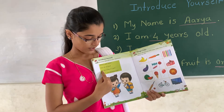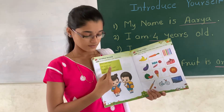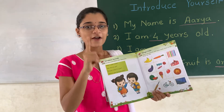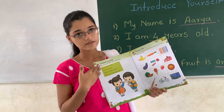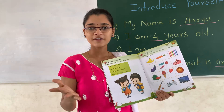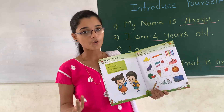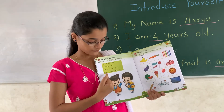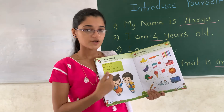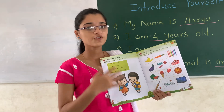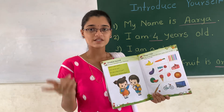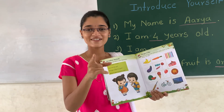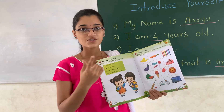Look at the third question: Are you a boy or a girl? If you are a girl, then you have to say: I am a girl. If you are a boy, then you have to say: I am a boy. Now the last question: What is your favorite fruit? If your favorite fruit is orange, then you have to say: My favorite fruit is orange. If your favorite fruit is strawberry, then you will say: My favorite fruit is strawberry.